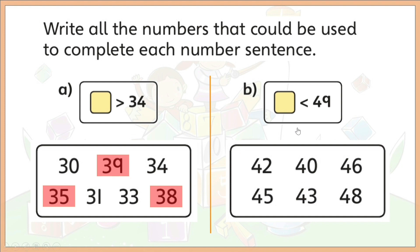For letter B, we are looking for numbers that are less than 49. And so, here are the answers. 42, 40, 46, 45, 43, and 48. All these numbers are less than 49. All checked? Perfect. Kiss your brain.